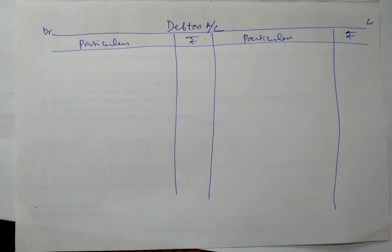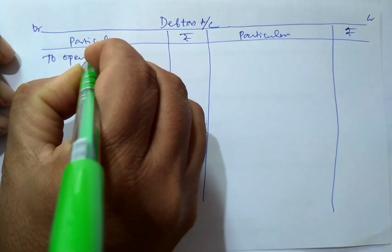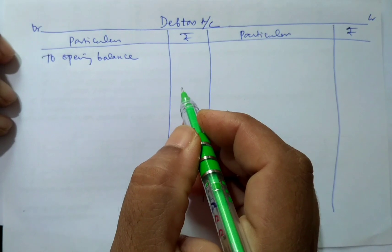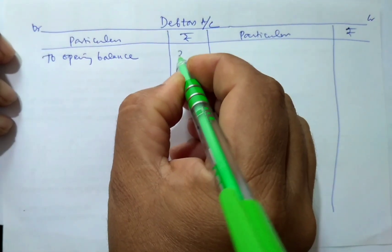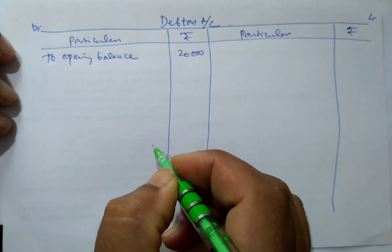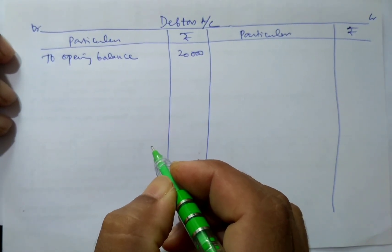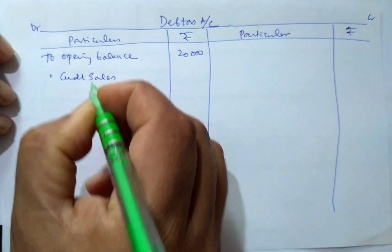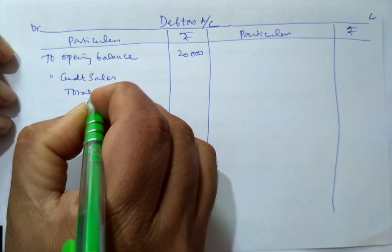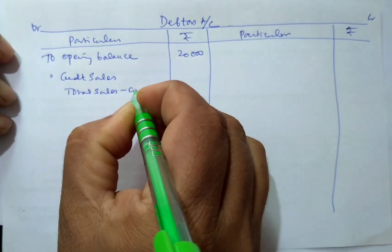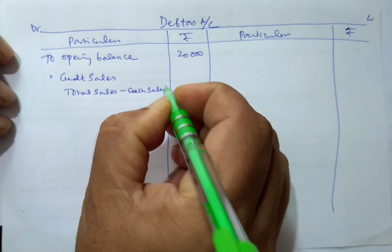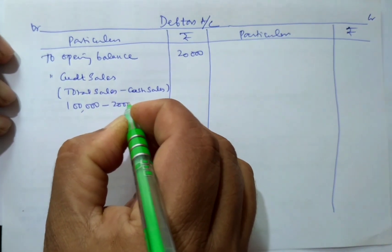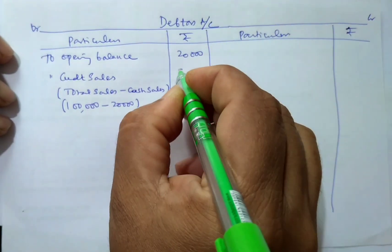Let us solve this problem. Opening balance of debtors account is an asset, so the opening balance always shows on the debit side: Rs. 20,000. Total sales is given Rs. 1,00,000 and cash sales is Rs. 20,000, which means we can calculate credit sales. Credit sales equals total sales minus cash sales: Rs. 1,00,000 minus Rs. 20,000 equals Rs. 80,000.